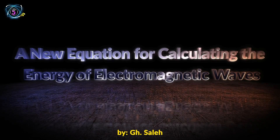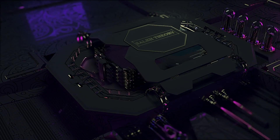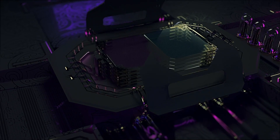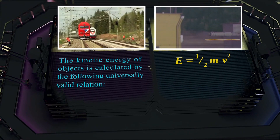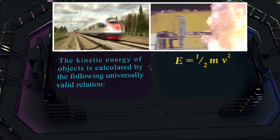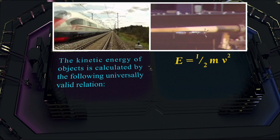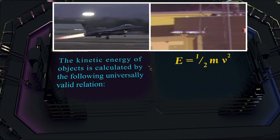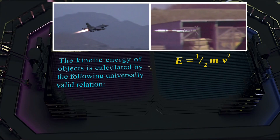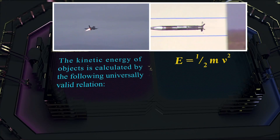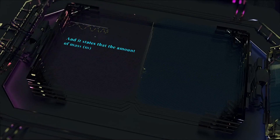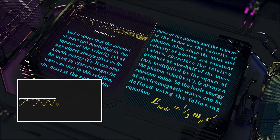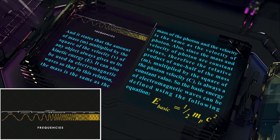A new equation for calculating the energy of electromagnetic waves. The kinetic energy of objects is calculated by the following universally valid relation. It states that the amount of mass multiplied by the square of the velocity of any object always gives us its kinetic energy E.